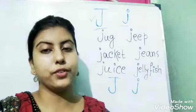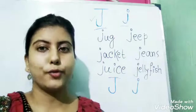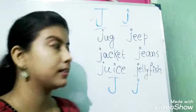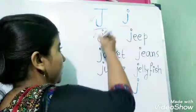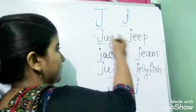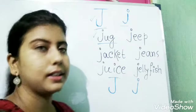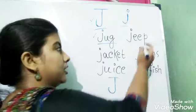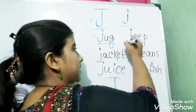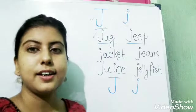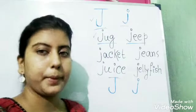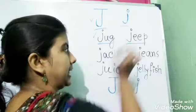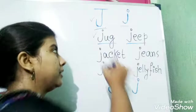Now we will learn a few words with J. The first one is jug. J-U-G. Jug. The next one is jeep. J-E-E-P. Jeep.